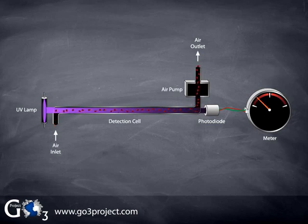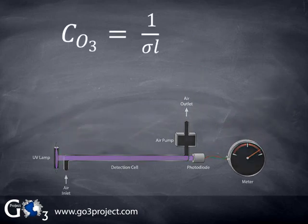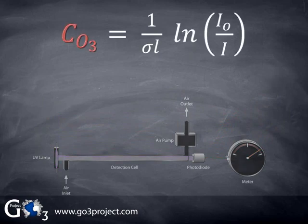If we stop passing ozone through the detection cell, the light intensity striking the photodiode goes up again and the meter reading increases. From our two light intensity measurements, measurements with and without ozone molecules present, we can calculate the ozone concentration based on the Beer-Lambert law for absorbance of light.